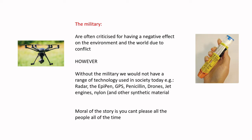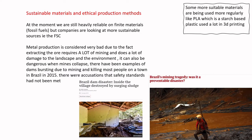We still rely heavily on finite materials like fossil fuels, oils and gases, but companies are looking for more sustainable sources. For timber-based materials, the FSC (Forest Stewardship Council) logo shows it's been sustainably sourced - they cut down trees but plant more to replace them. Metal production is considered very bad for the environment; you have to extract ores through huge amounts of mining which does a lot of damage to the landscape, and mines can become dangerous when they collapse.